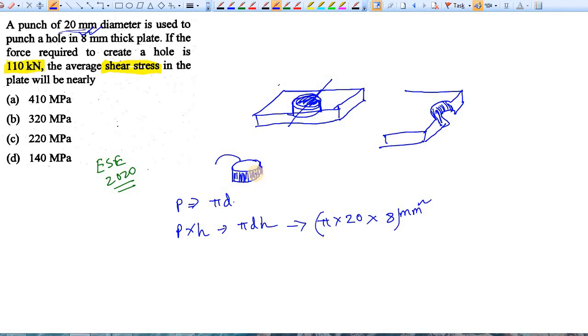What is the amount of force you are applying? You are applying 110 kilonewtons of force to create this hole. The stress is simple - by the formula, the stress τ is force divided by area. You have already got the area and the force is given as 110 kilonewtons. So stress is 110 kilonewtons divided by π times 20 times 8 mm².